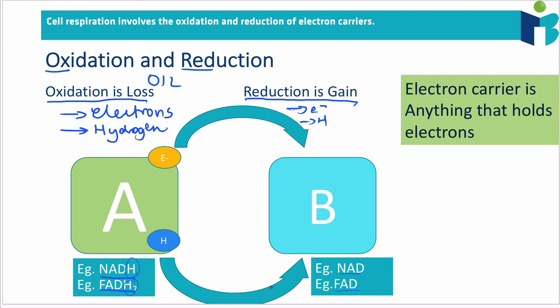FADH2 can convert into FAD by being oxidized, and FAD can convert into FADH2 by being reduced. And we'll see this over and over again.